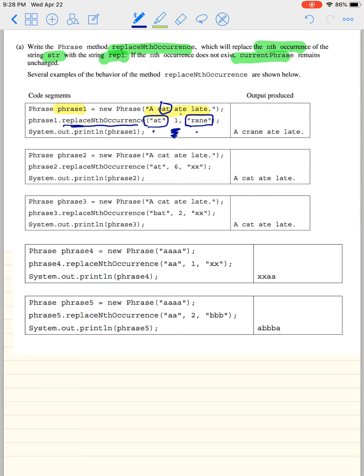So you're going to replace it with rain. So instead of saying a cat ate late, it says a crane ate late. So it just replaces that str with repl. Let's look at another example. A cat ate late. It wants to replace at with xx, but at the sixth occurrence. So I have 123. And since I can't get to the sixth one, it remains exactly the same. Let's try another one.